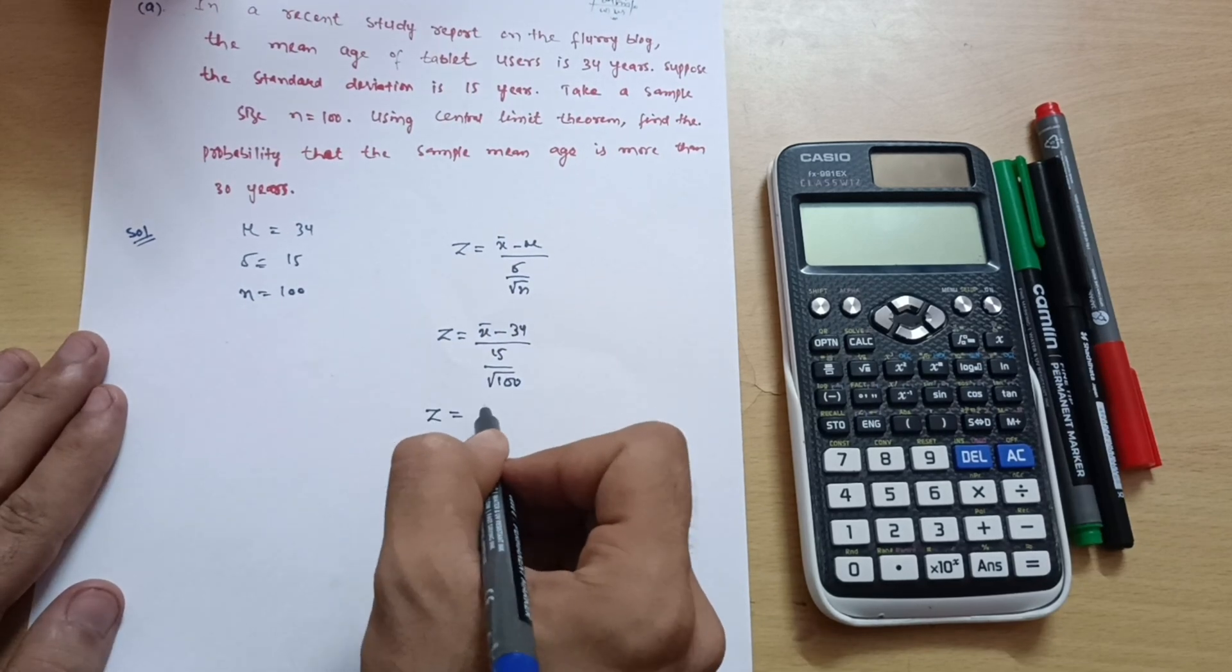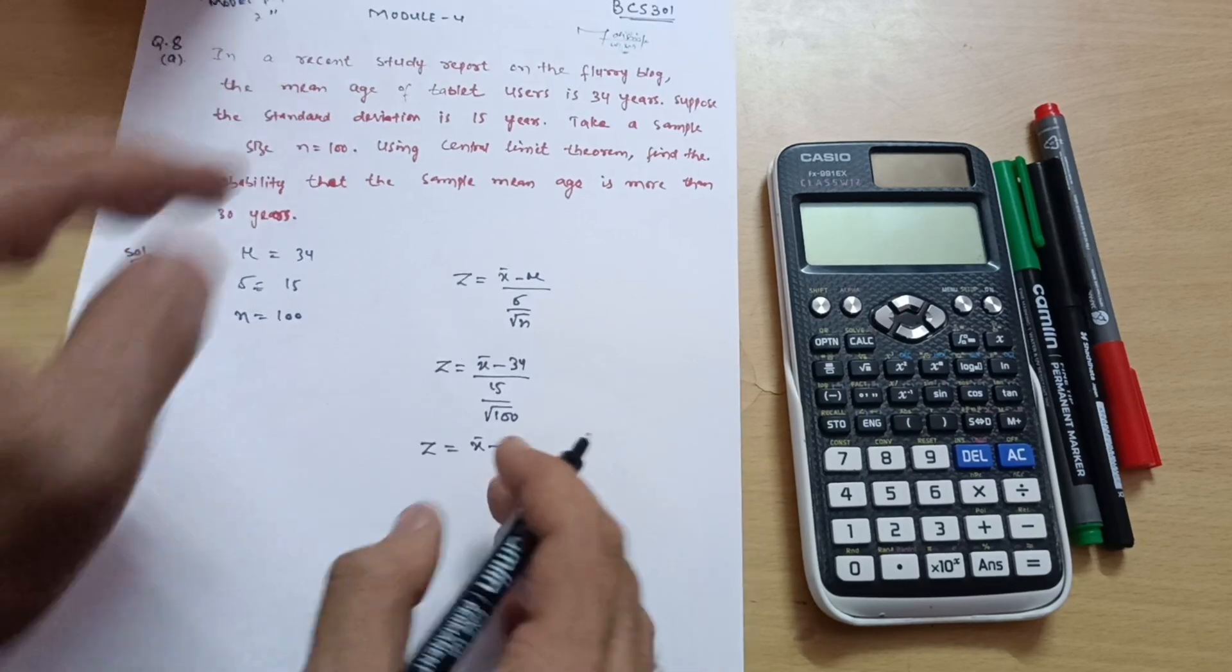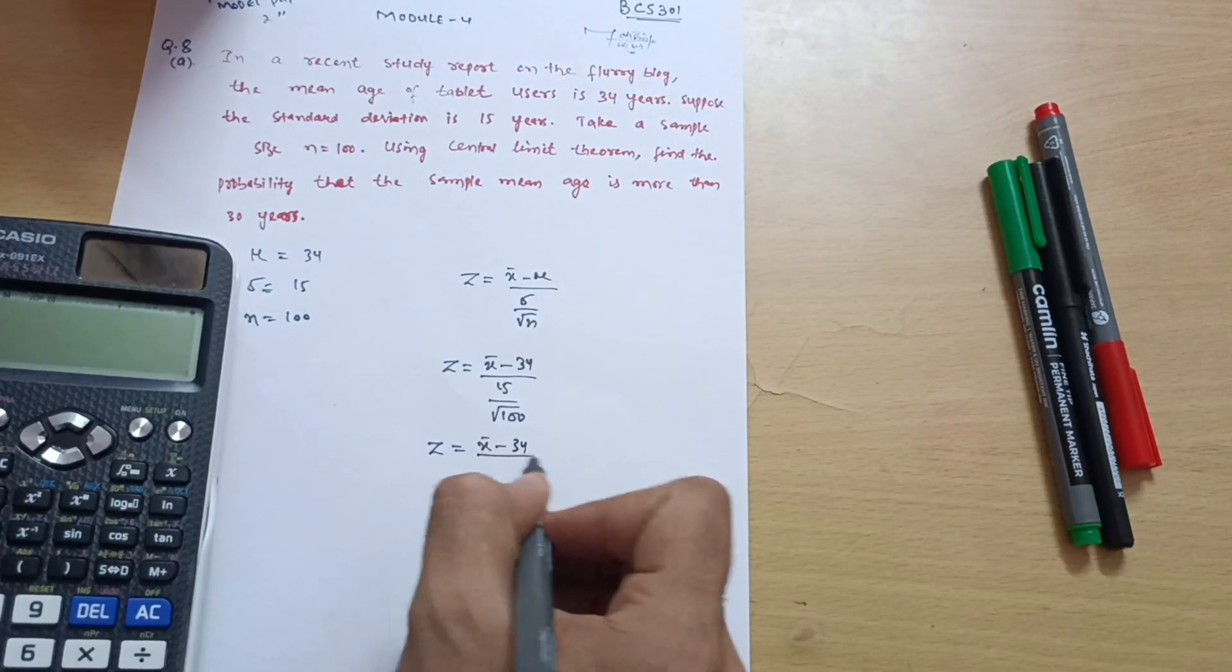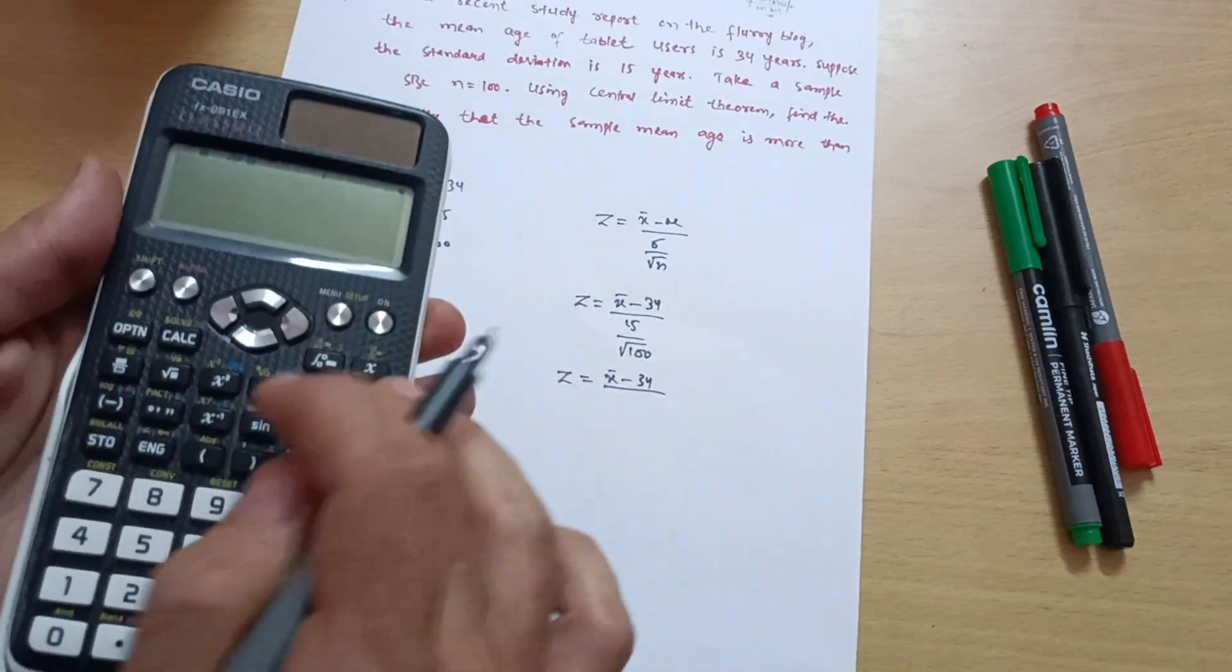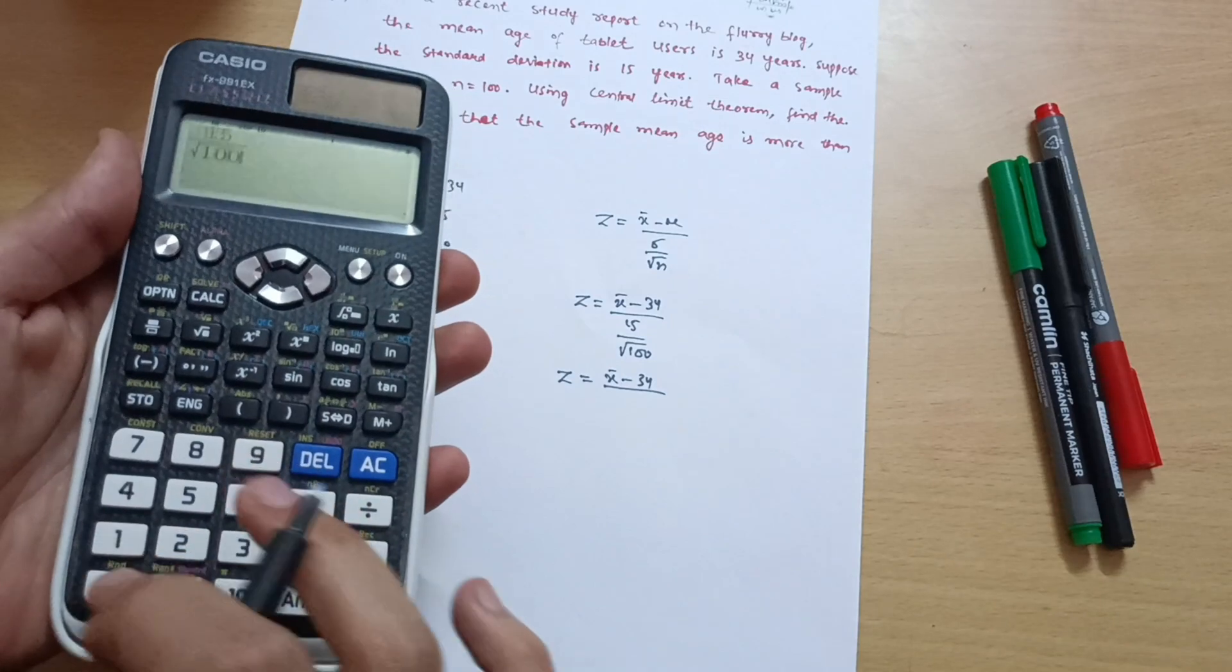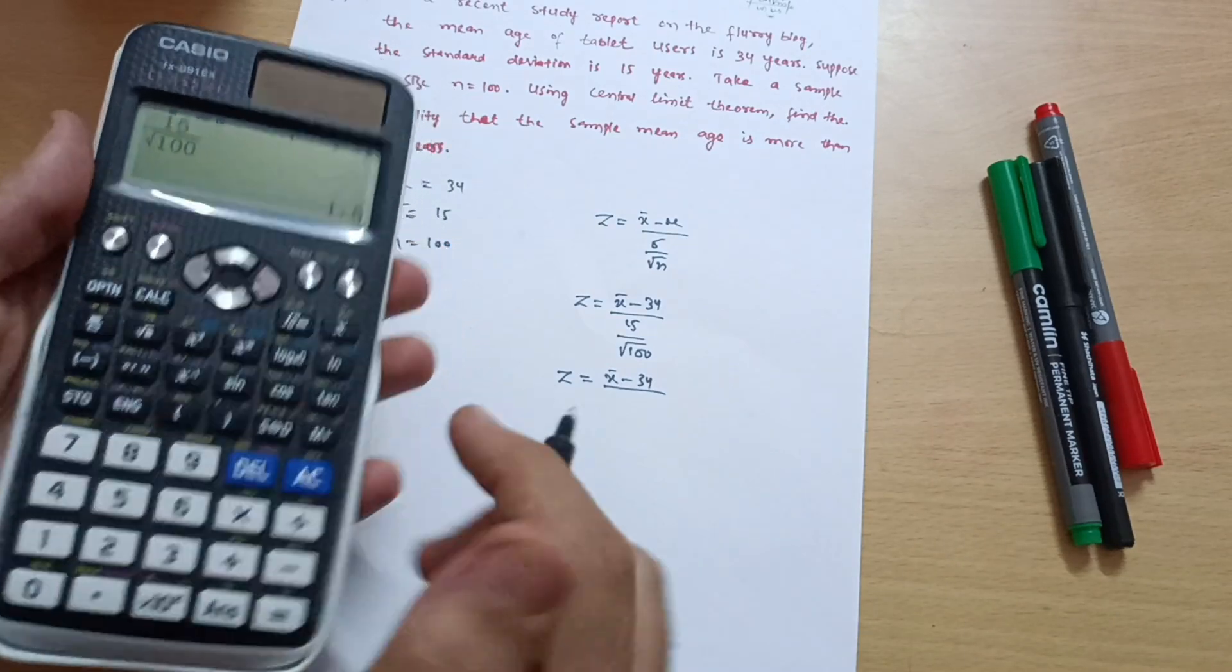So I can write z equals x̄ minus 34 divided by 15 divided by square root of 100. So 15 divided by root 100, which is equal to 1.5. That is 1.5. Now what do we have to calculate in this question?